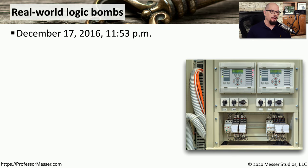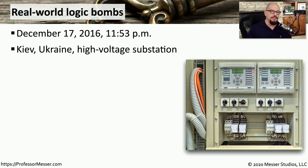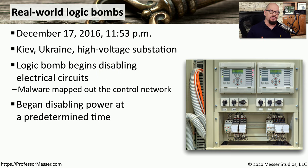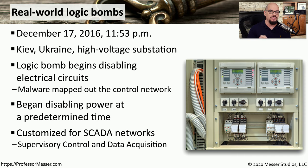A more disruptive type of time bomb occurred on December 17th of 2016 at 11:53 p.m. in Ukraine. This focused on high-voltage substations — the substations that sent power between different locations within the country. At that particular time, the logic bomb began disabling electrical circuits and bringing down electrical connections throughout the country. The malware that had been installed mapped out the control network of these systems and began disabling power at a particular date and time. This malware was customized to work with SCADA networks — the supervisory control and data acquisition networks used to manage these types of electrical systems.